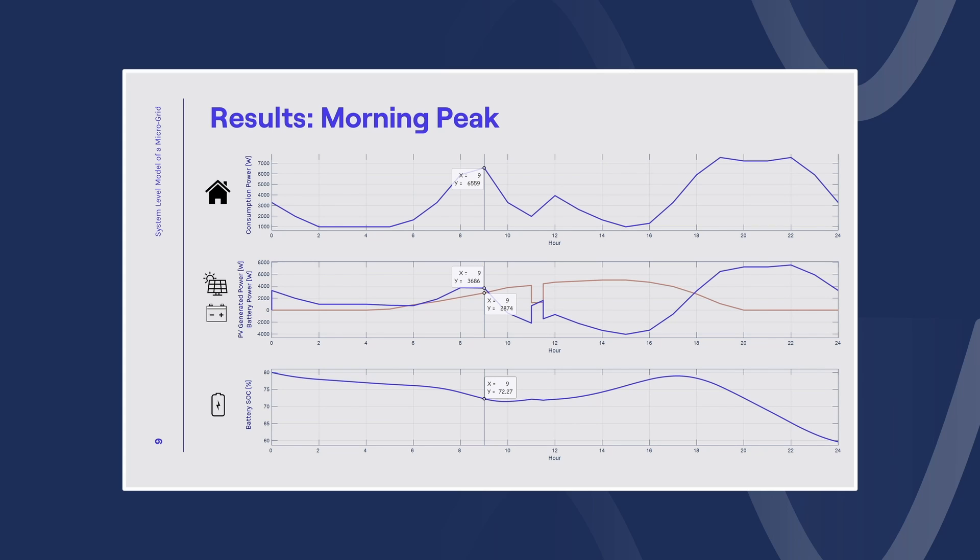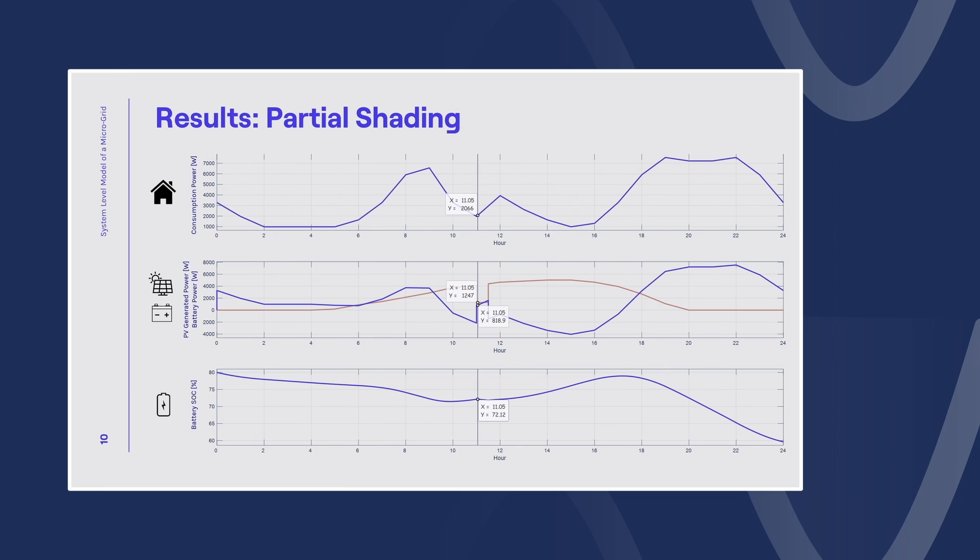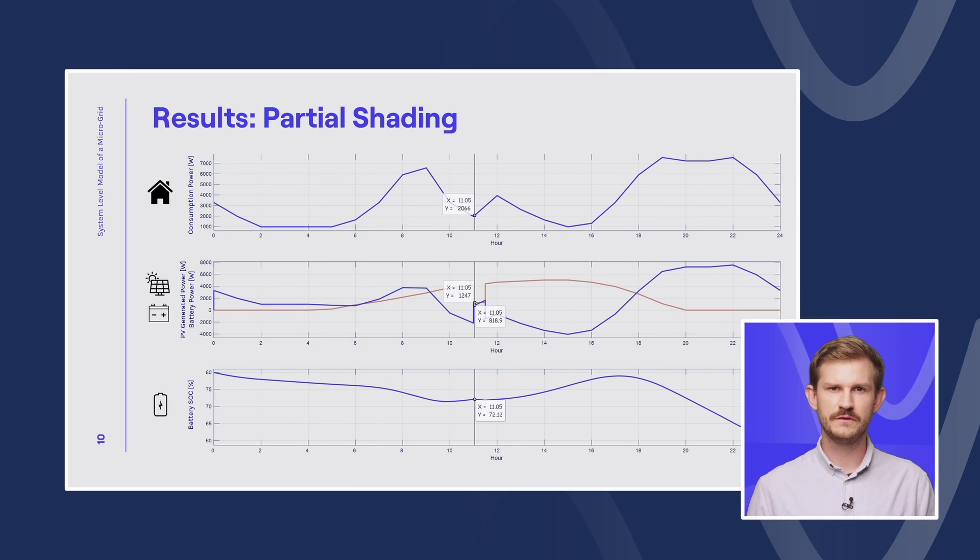The first important point of the simulation is the morning peak. We can see that during the morning peak the consumption of the households are bigger than the generated power of the solar panels. So we are using the battery to cover the power needs of the households. Another important part is the partial shading. As we mentioned earlier, the solar panels undergo partial shading at 11 am and we see the effect of this in the results. Because of this shading, the power of the solar panels drop back and we need the batteries again to cover the needs of the household.